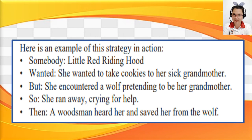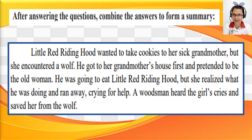Here is an example of the Somebody Wanted But So Then strategy using the story Little Red Riding Hood. Somebody: Little Red Riding Hood. Wanted: She wanted to take cookies to her sick grandmother. But: She encountered a wolf pretending to be her grandmother. So: She ran away crying for help. Then: A woodsman heard her and saved her from the wolf. Combining these answers: Little Red Riding Hood wanted to take cookies to her sick grandmother, but she encountered a wolf who got to her grandmother's house first and pretended to be the old woman. He was going to eat her, but she realized what he was doing and ran away crying for help. A woodsman heard her cries and saved her from the wolf.